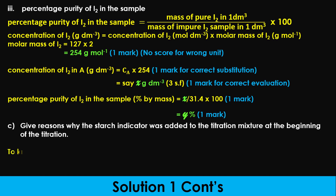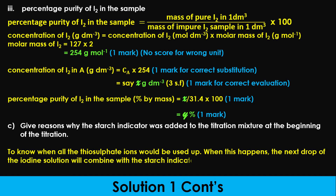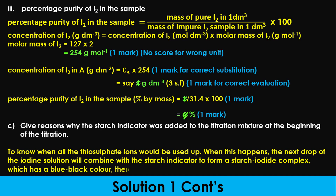The starch indicator was added to the titration mixture at the beginning of the titration to know when all the thiosulfate ions would be used up. When this happens, the next drop of iodine solution will combine with the starch indicator to form a starch-iodide complex, which has a blue-black colour, thereby indicating the end of the reaction. Question 2.